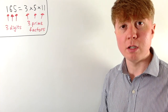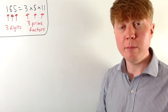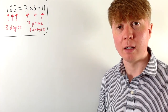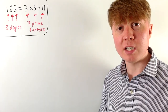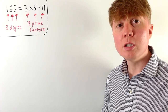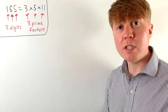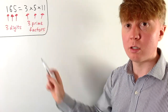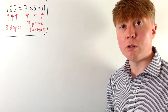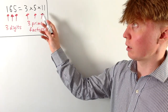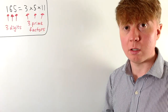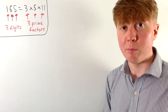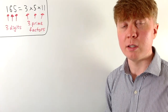We're going to explore positive integers which have the same number of digits in base 10 as they have distinct prime factors. For example, 165 has got three digits written in base 10, and it's also got three distinct prime factors. We'll explore some examples and non-examples to begin with.